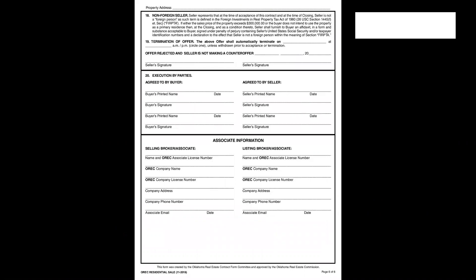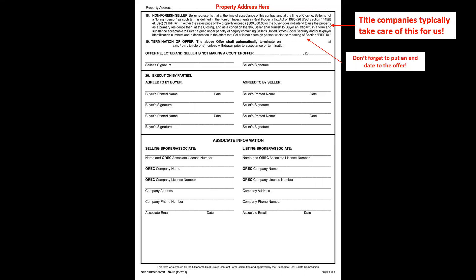On page six of six — always write the property address at the top. The non-foreign seller statement applies only to properties over $300,000 and is a special tax for non-U.S. citizens who sell. Title companies typically handle this, but check with them to confirm. Do not leave the offer date blank — always put an offer date and an offer end date, so sellers cannot come back six months later, after your buyer has purchased elsewhere, and accept the contract.